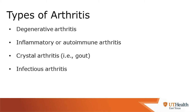There are hundreds of types of arthritis, but some of the more common ones include degenerative arthritis — for example osteoarthritis — inflammatory or autoimmune arthritis, crystal arthritis, and infectious arthritis.